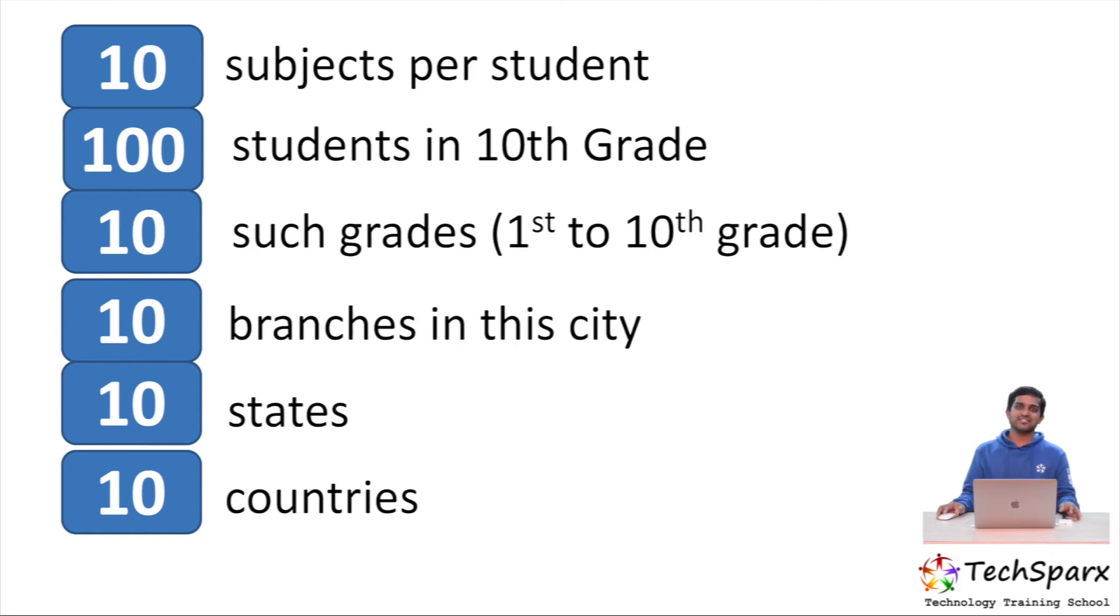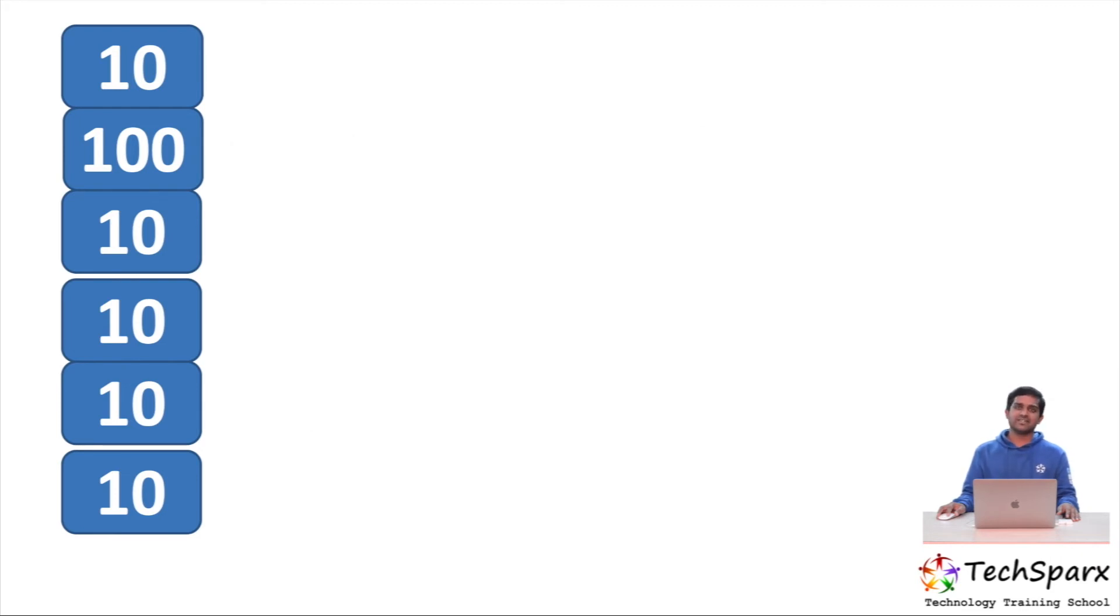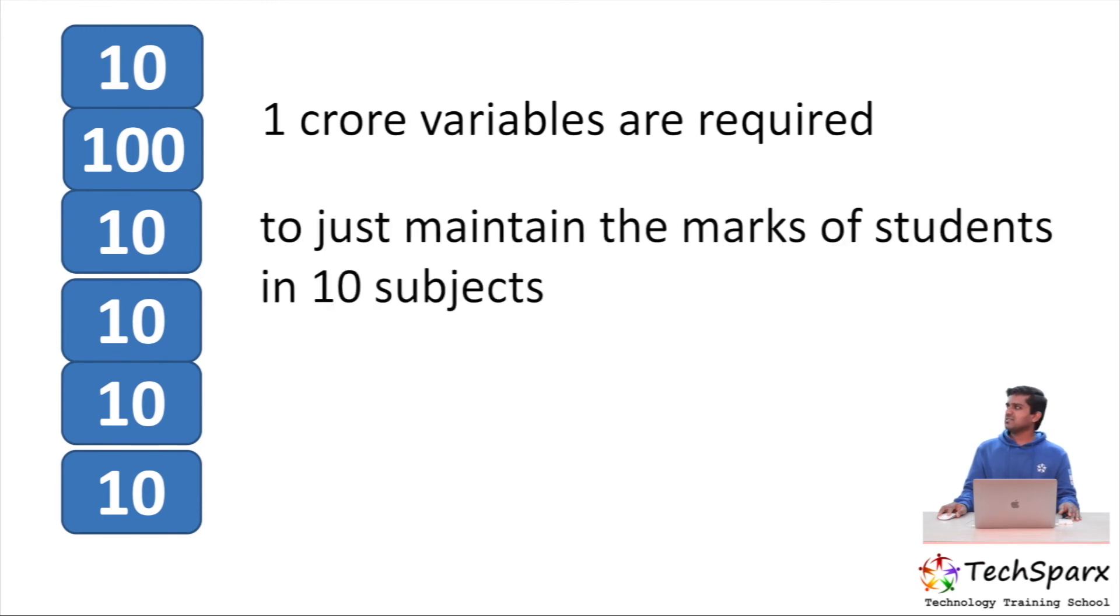So basically if you have to develop a software to manage the school management system where you are storing the marks of 10 subjects of 100 students in each grade, having 10 grades in 10 branches in the city, which is spread across 10 cities in the country and across 10 countries in the world, you require 1 crore variables to just maintain the marks of students in 10 subjects across all the branches of a school. I don't think this is a viable solution.